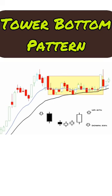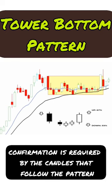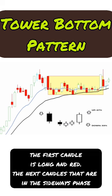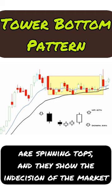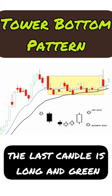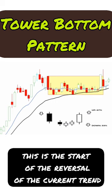It occurs during a downtrend; confirmation is required by the candles that follow the pattern. The first candle is long and red. The next candles, which are in the sideways phase, are spinning tops and they show the indecision of the market. The last candle is long and green — this is the start of the reversal of the current trend.